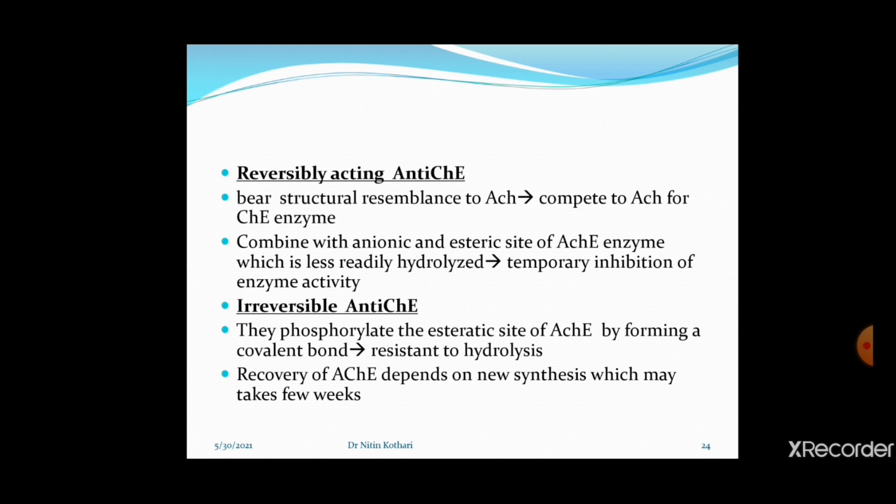Reversible anti-cholinesterase drugs — the carbamates: physostigmine, neostigmine, pyridostigmine, rivastigmine, as well as donepezil, tacrine, and galantamine — act as competitive antagonists. They have structural resemblance to acetylcholine and compete with it for binding to the cholinesterase enzyme. They bind to both the anionic site and the esteratic site, are slowly hydrolyzed, causing temporary inhibition of enzyme activity.